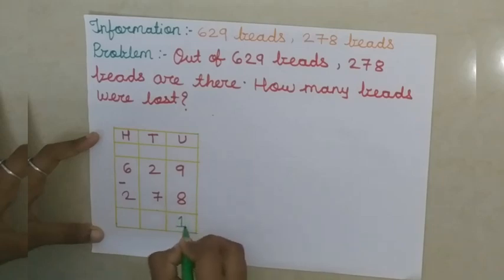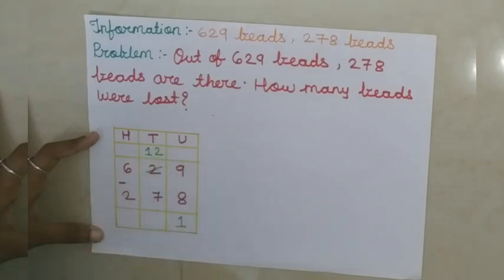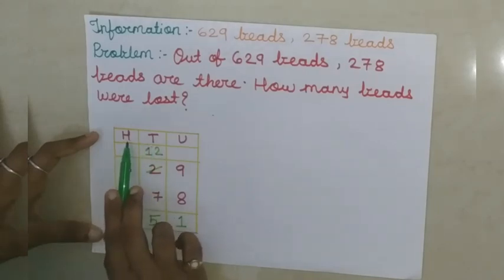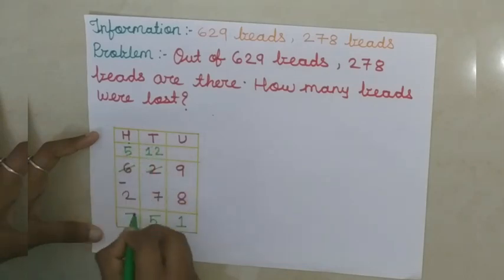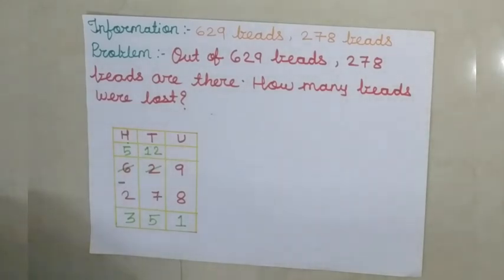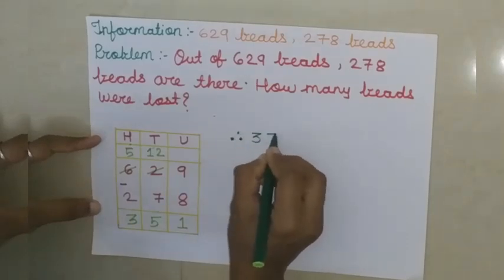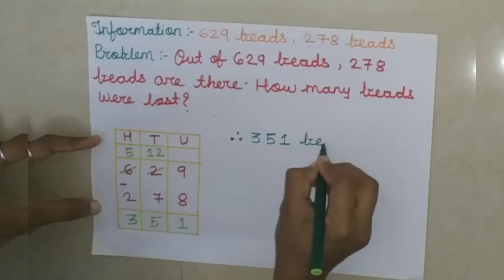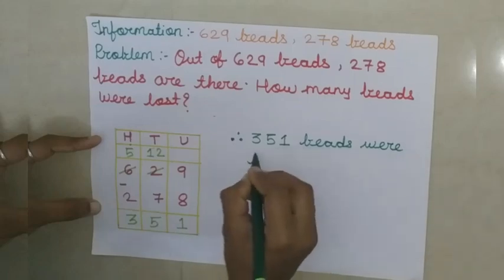9 minus 8 is 1. 2 minus 7, we can't do. So I am writing here 12. 12 minus 7 is 5. Now see here, we borrowed from the hundreds place, so here will be 5. 5 minus 2 is 3. Now children, tell me how many beads were lost. 351 beads were lost. So write the answer in words. Therefore, 351 beads were lost.